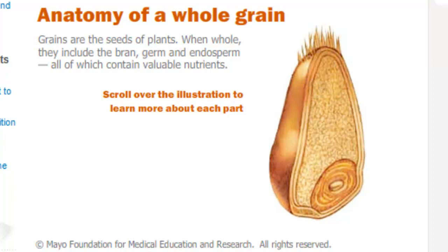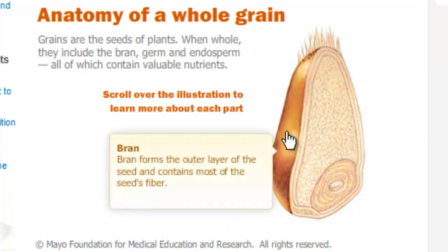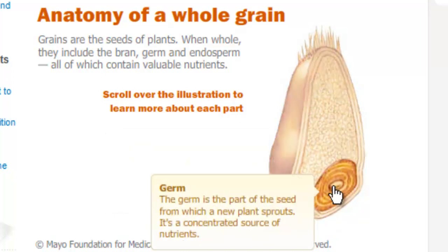I am going to drag the mouse pointer over the three different components of the whole grain. The first of which is the bran. The bran forms the outer protective layer of the seed. It contains some important minerals and vitamins and also contains most of the seed's fiber. Fiber is needed to prevent constipation. The second component of the whole grain is the germ, which is also the reproductive kernel of the seed. The germ contains many helpful minerals and vitamins that our body needs.